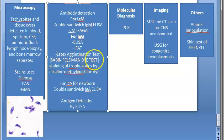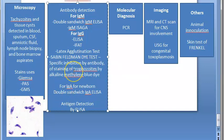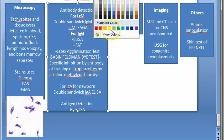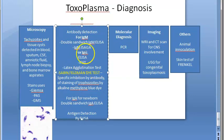Now, what is the Sabin-Feldman dye test? You stain the trophozoites with alkaline methylene blue dye. It detects antibodies by checking specific inhibition — the presence or absence of toxoplasma antibodies through staining of trophozoites by alkaline methylene blue dye. This test detects IgG and is used in lab diagnosis of Toxoplasma gondii.